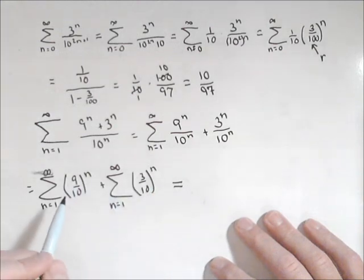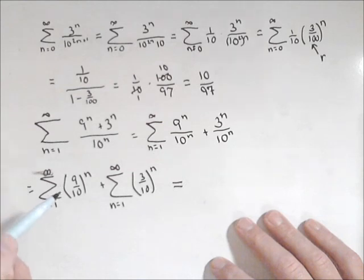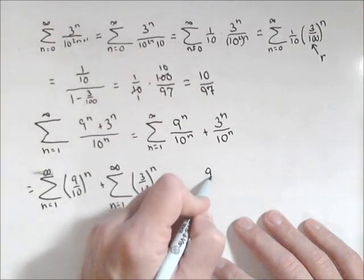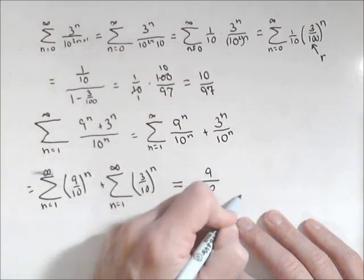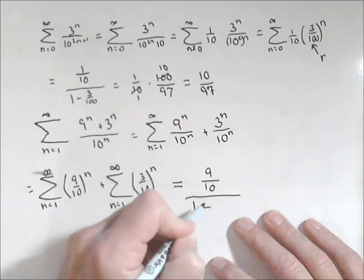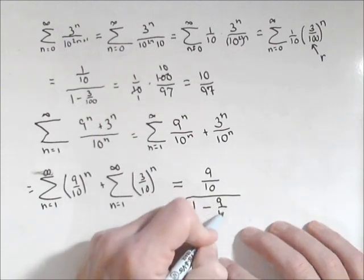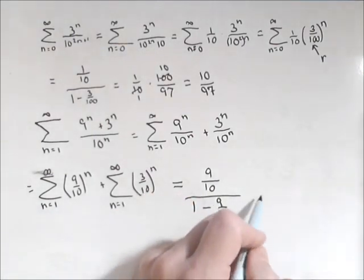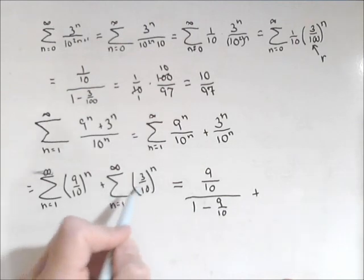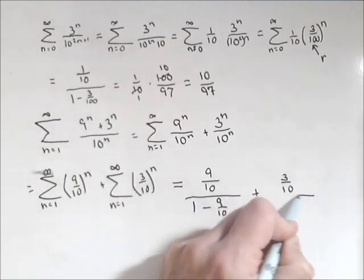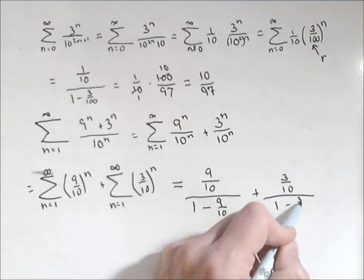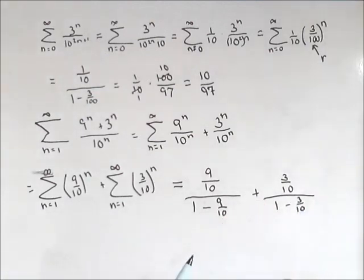It's just a matter now of doing our formula for each. Remember we do have to calculate what the first term is. Since n equals 1, the first term is 9 tenths to the first, or 9 tenths. So I have 9 tenths divided by 1 minus our common ratio which is 9 tenths. And that's going to be plus the first term here, which is 3 tenths, over 1 minus the common ratio, which for that one is 3 tenths.